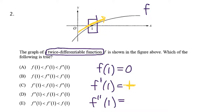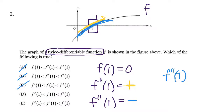Very similarly, we do the same idea for f double prime at 1. I have no idea what that specific value is, but notice my function is concave down like a frown — it is concave down, so that value is negative. If we're ordering these from least to greatest, the smallest is f double prime at 1. That gets rid of A, B, and C. The next smallest would be f at 1, because that is 0, so that throws out E. My answer choice is D.